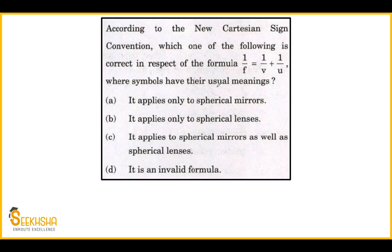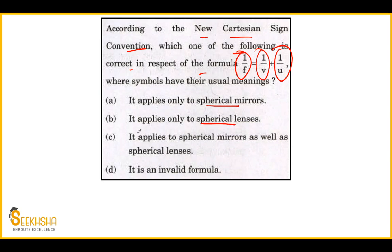The next is a very technical question. According to the new Cartesian Sign Convention, which one of the following is correct in respect of the formula 1/F = 1/V + 1/U, where symbols have their usual meanings? Option A: it applies only to spherical mirrors. Option B: it applies only to spherical lenses. Option C: it applies to spherical mirrors as well as spherical lenses. Option D: it is an invalid formula.